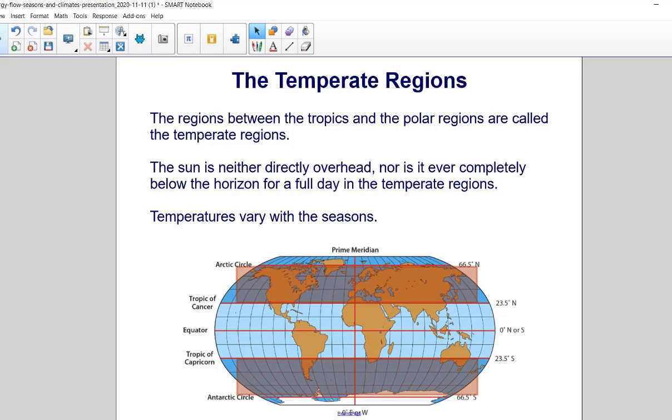The regions between the tropics and the polar regions are called the temperate regions. The Sun is neither directly overhead nor is it ever completely below the horizon for a full day in the temperate regions. Temperatures vary with the seasons.